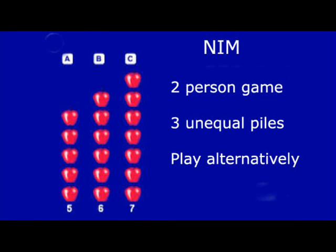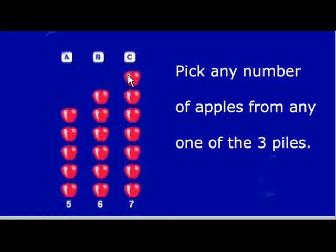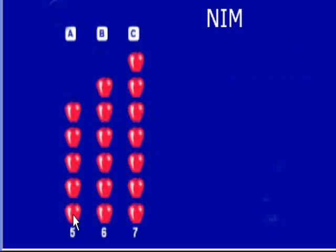One of the most ancient two-person mathematical games is NIM and is of Chinese origin. In this version, it is played with three unequal piles of apples and you play against one another. The rules are very simple. Both persons play alternatively, picking any number of apples from any single pile of the three piles. Whosoever is forced to pick the last apple is the loser.